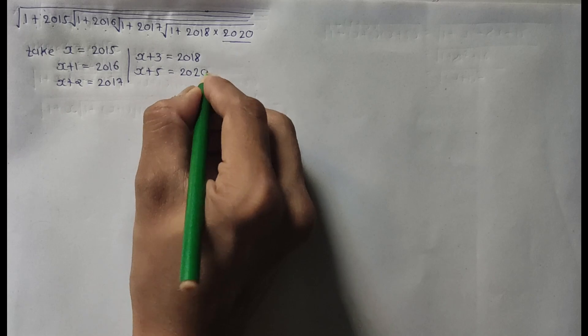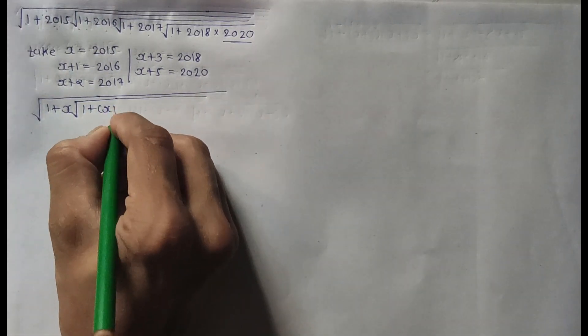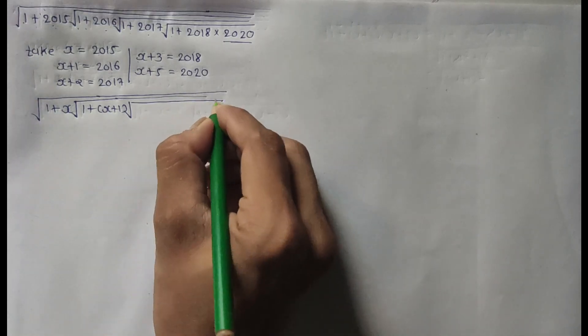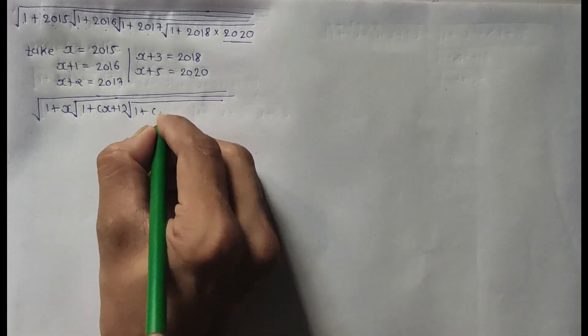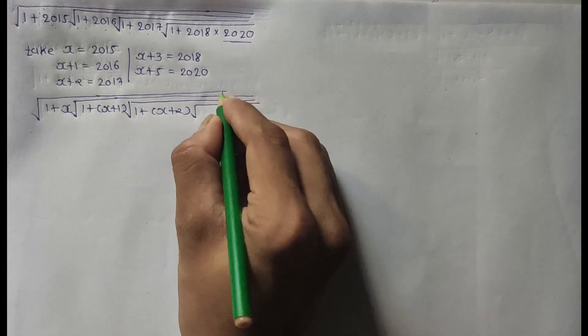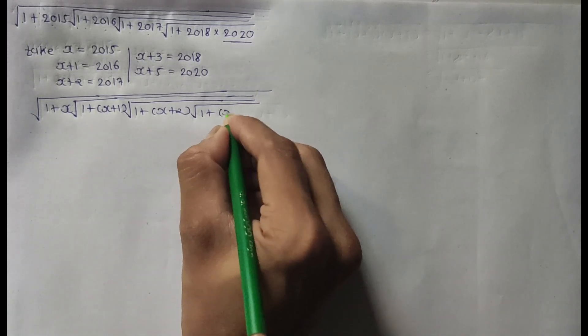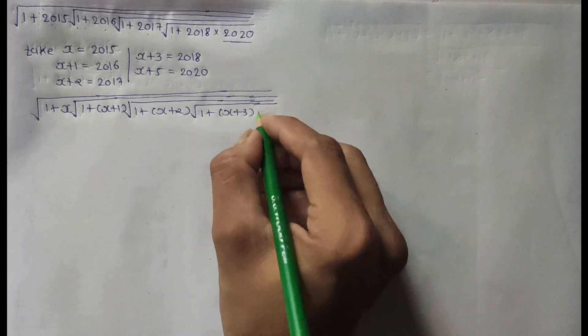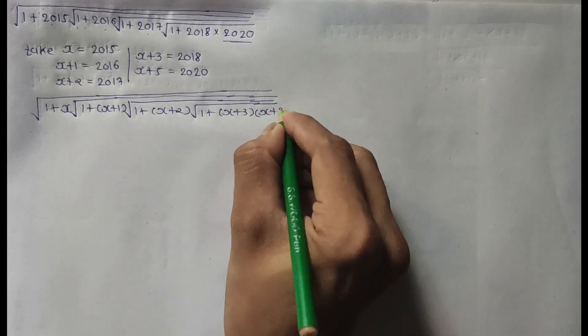Take x plus 5 equal to 2020. Now the question will be: square root of 1 plus x, times square root of 1 plus (x+1), times square root of 1 plus (x+2), times square root of 1 plus (x+3), and last x plus 5.